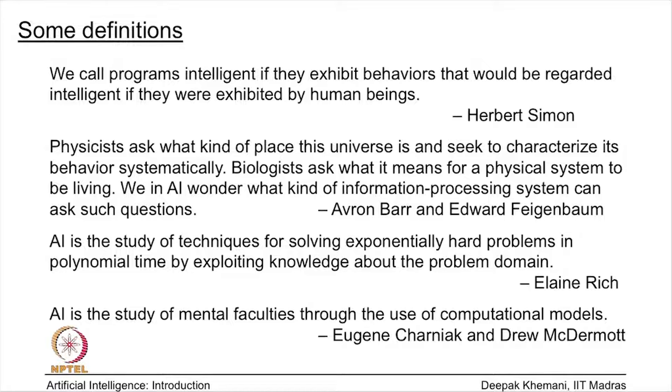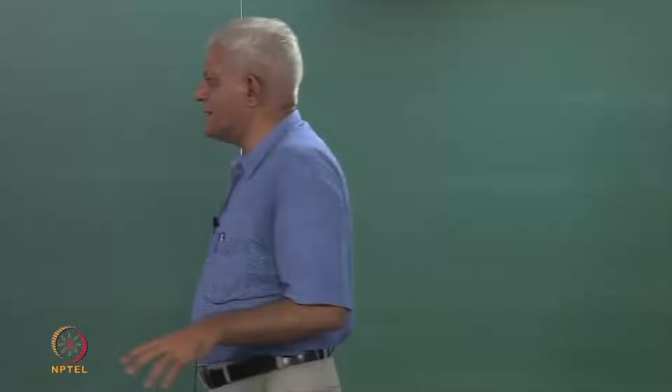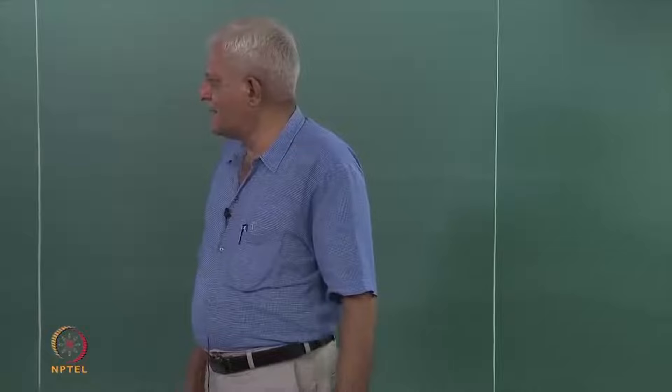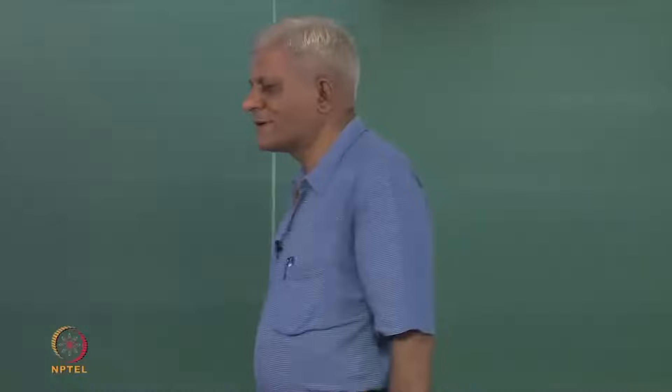Then Elaine Rich — one of the popular AI textbook authors — gives a computer science flavor to the definition. She says AI is the study of techniques for solving exponentially hard problems in polynomial time, by exploiting knowledge about the problem domain. Those who are die-hard theory people would immediately object saying you cannot solve a hard problem in polynomial time, because by definition it is a hard problem.